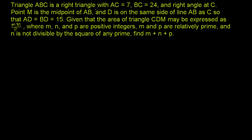Triangle ABC is a right triangle with AC equal to 7, BC equal to 24, and a right angle at C. Let's try to draw that. Let's draw the right angle at the origin. So let's say that this is C right over here.